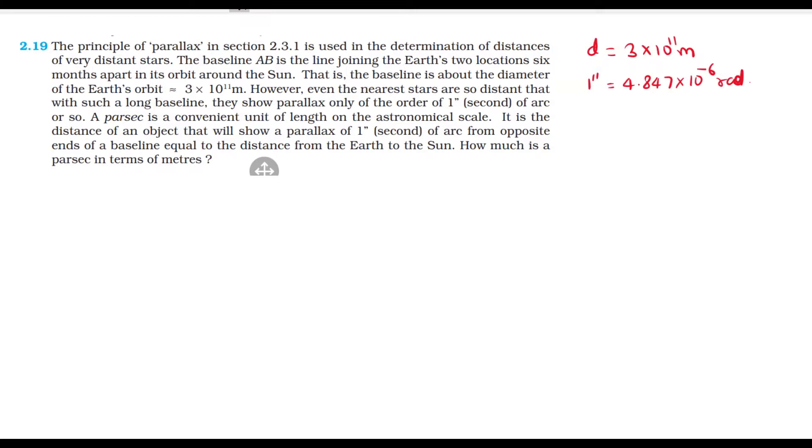A parsec is a convenient unit of length on the astronomical scale. It is the distance of an object that will show a parallax of 1 second of arc from opposite ends of a baseline equal to the distance from Earth to the Sun. How much is a parsec in terms of meters? तो यहाँ पर हम Earth की radius की बात करें, तो radius हमारे पास 1.5 × 10^11 meter आ जाएगी.